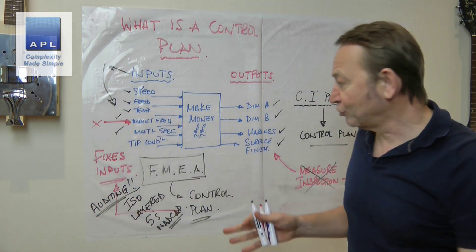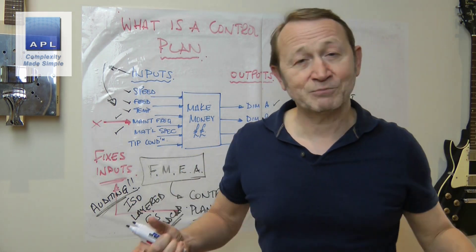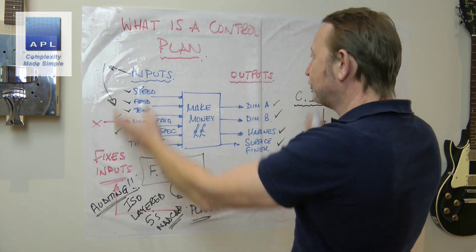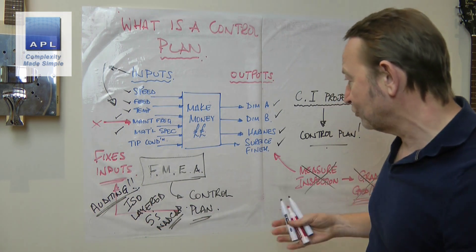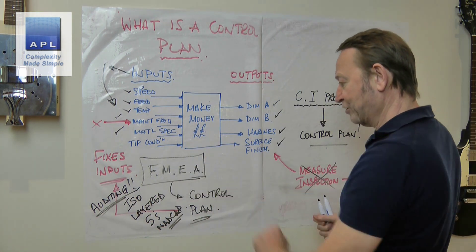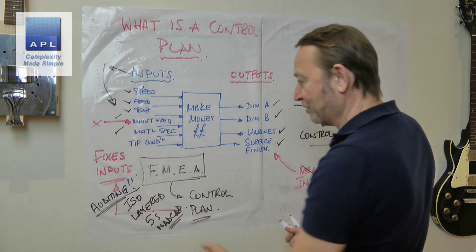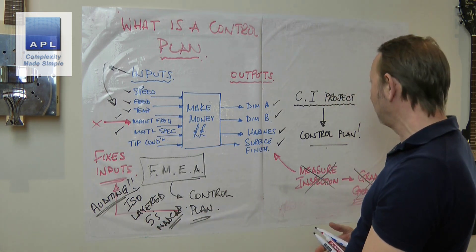And what do you lose? You lose control. And now you have to inspect the crap out of everything because you never know whether you're going to make anything good or bad or not. That is not a control plan, that's an inspection plan.